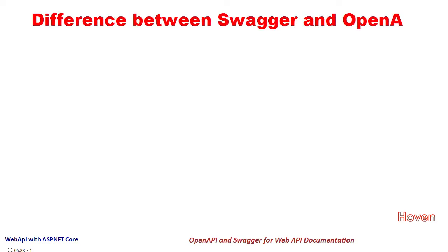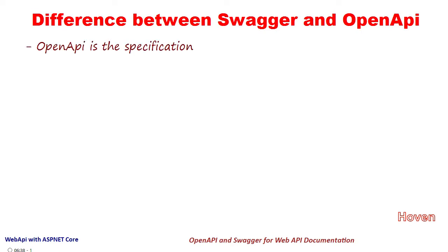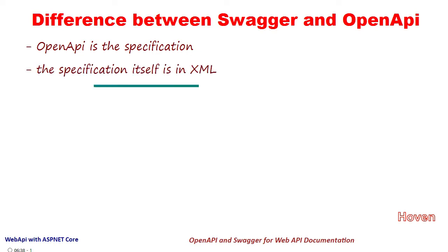Let us quickly have a look at the difference between OpenAPI and Swagger. OpenAPI is the specification. It lays down the rules for describing the web API, for documenting parameters, for documenting the responses, and so on. These rules have been described using XML.